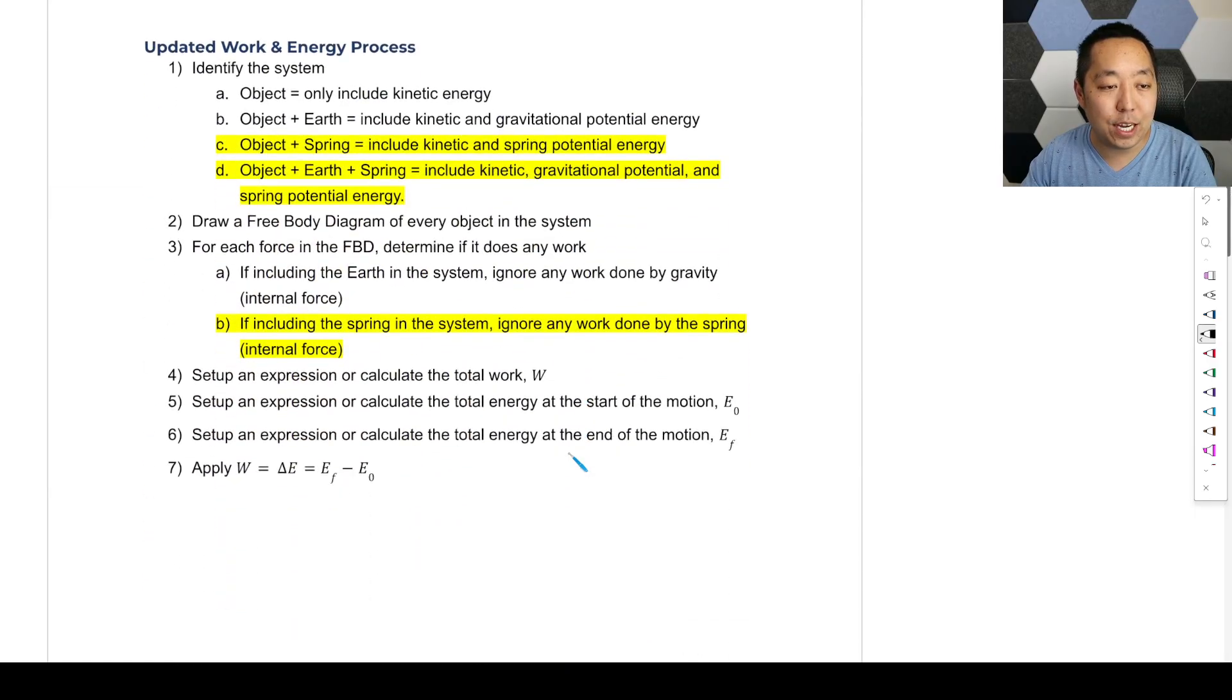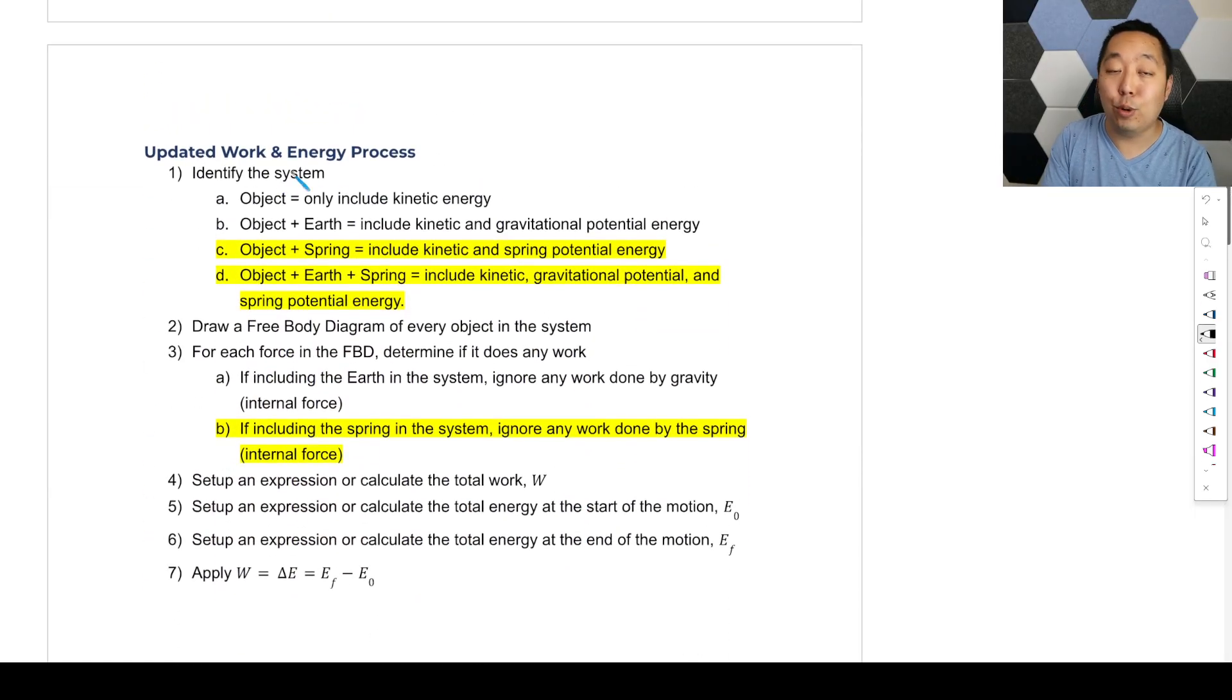Okay, so now we have a few modifications to make here. We have an object. Our choices on a system are the object or multiple objects, the objects plus the earth, the objects plus the spring, or all three: objects, earth, and spring. Okay, those are the only permutations of choices of systems that we're going to have.